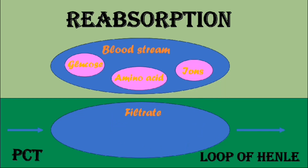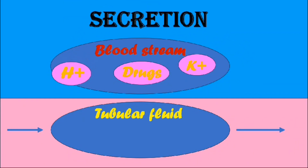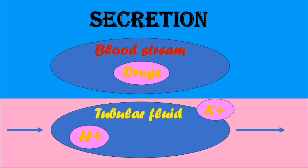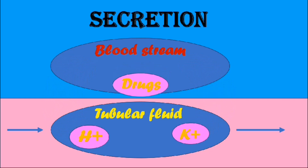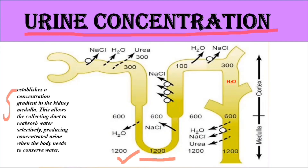This process helps maintain the body's balance of electrolytes and water. Secretion: some substances such as hydrogen ions, potassium ions, and drugs are actively secreted from the bloodstream into the tubular fluid to maintain proper pH balance and eliminate potentially harmful compounds from the body. Concentration of urine: the nephron, especially the loop of Henle, plays a crucial role in concentrating urine by establishing a concentration gradient in the kidney medulla.